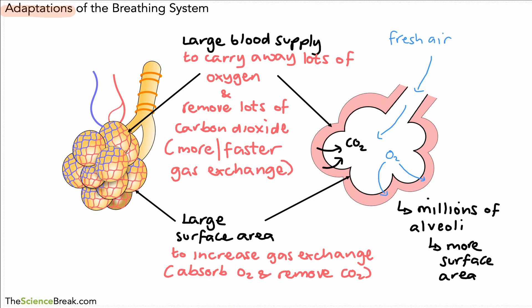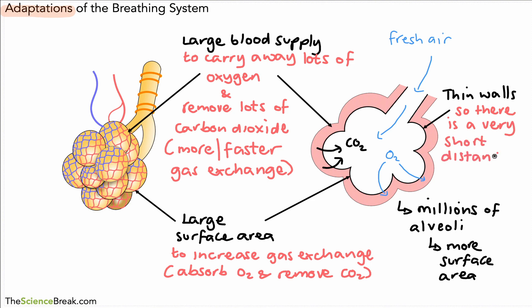One more adaptation has to do with the actual thickness of the walls of the alveolus. If we look at the wall of the alveolus, it is very thin. The walls of the alveoli are very thin, which means there is only a very short distance for oxygen and carbon dioxide to diffuse in and out of the lungs — resulting in better gas exchange.